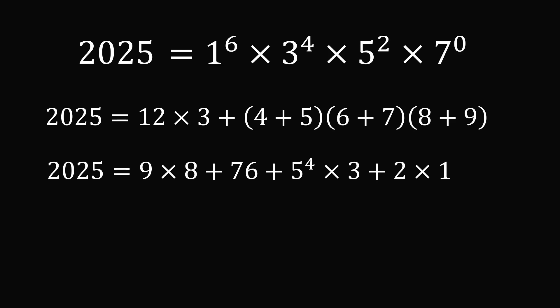If we want the digits to be in descending order, 2025 = 9 × 8 + 76 + 5⁴ × 3 + 2 × 1.